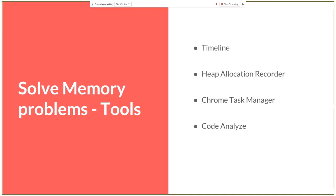So how can we solve memory problems? If we have symptoms of memory leaks like bad performance or laggy appearance of UI components, we need to use some debugging tools. Chrome DevTools has a good variety of built-in tools like Timeline, Heap Snapshot, Recorder, and Chrome Task Manager. We will go through these points and see how to take advantage of these tools to debug memory leaks.